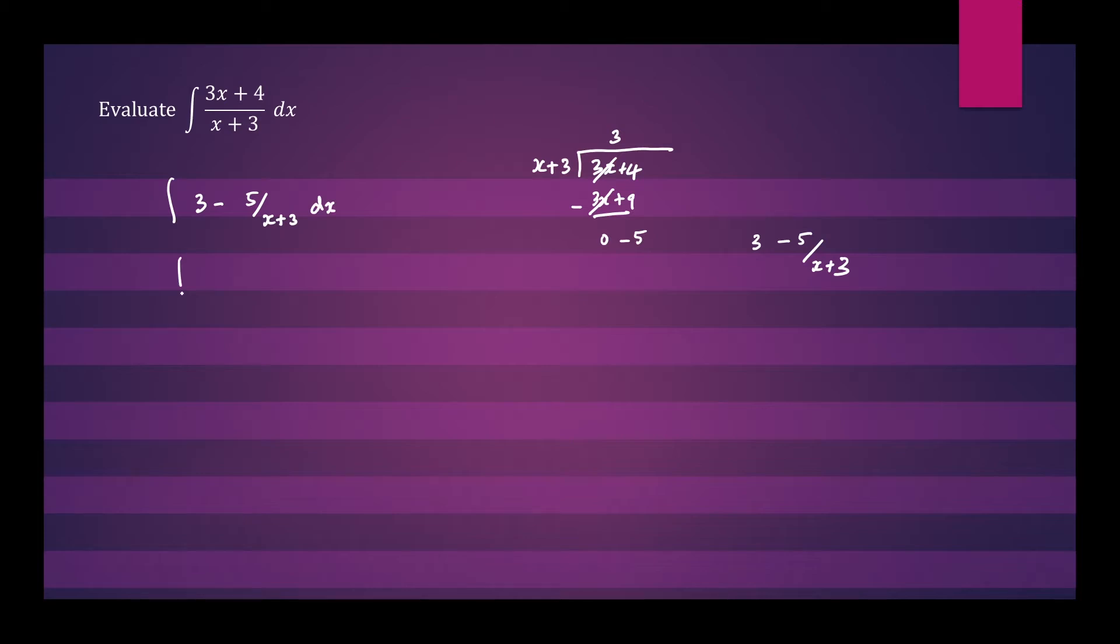So let's integrate each part separately. Let's integrate 3 dx minus 5 times 1 over x plus 3 dx. So the integral of 3 is 3x minus 5 times the integral of 1 over x plus 3 is natural log x plus 3. And add on our constant of integration, which would be C. And this is our final answer.